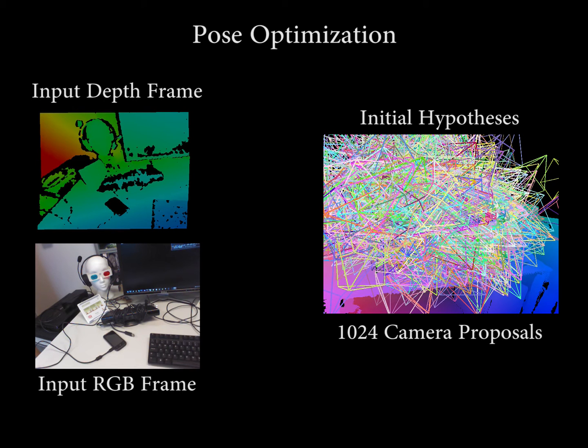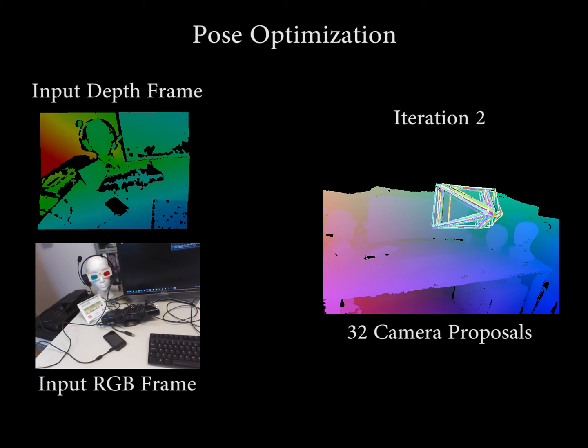Here we see an example of the pose optimization procedure. For a given input RGBD frame, we first generate a set of hypotheses. Every iteration reduces the number of candidates until we converge to the final solution.